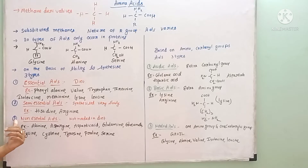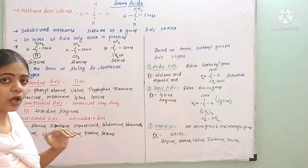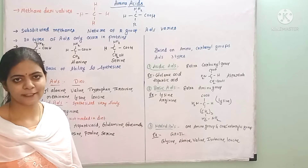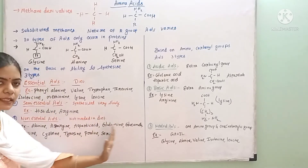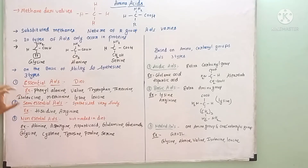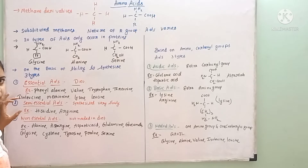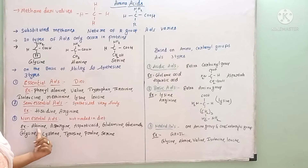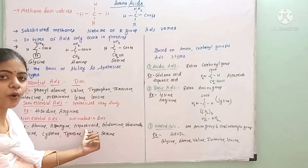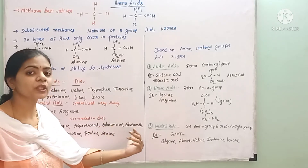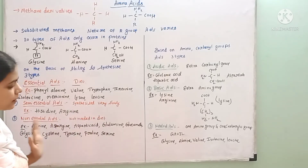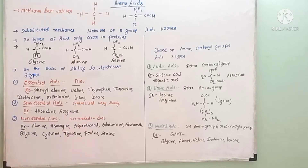Non-essential amino acids need not be supplied through the diet — they are synthesized by our body itself. The remaining 10 amino acids (since 8 essential plus 2 semi-essential make 10) are non-essential. Examples are alanine, arginine, aspartic acid, glutamine, glutamic acid, glycine, cysteine, tyrosine, proline, and serine.